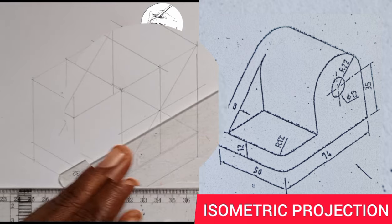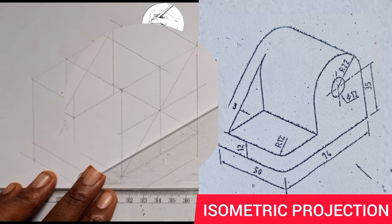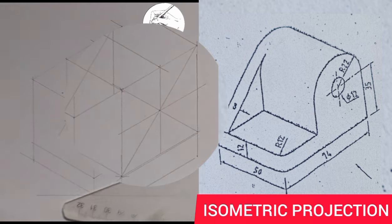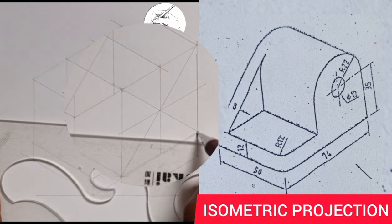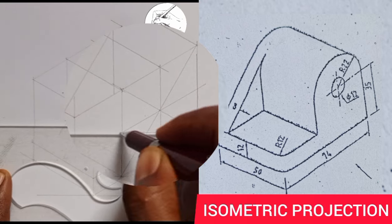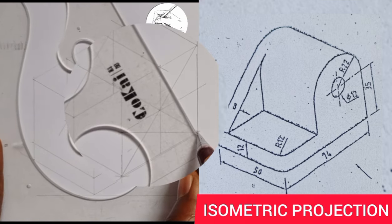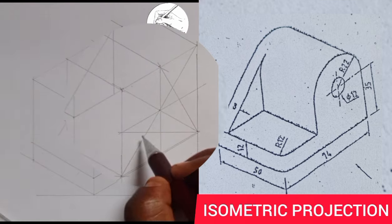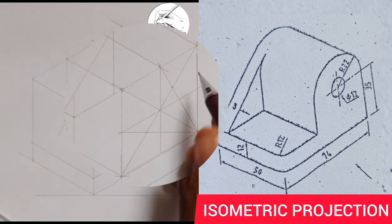Now I am going to pick a point from this end to the other end here, and from this end to the other end here — so this is where they are meeting. Once I've done that, I'll take my compass.